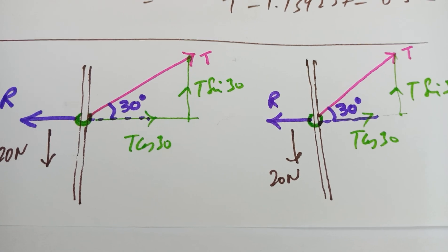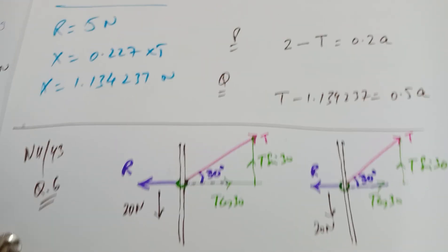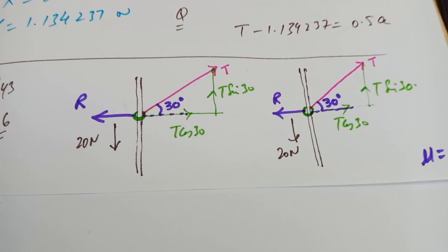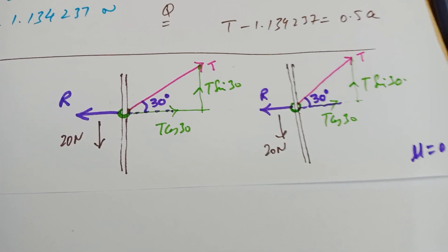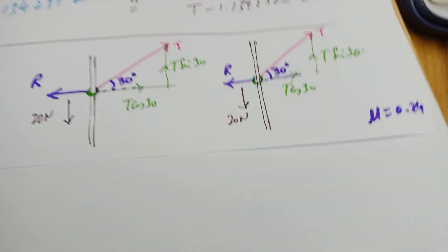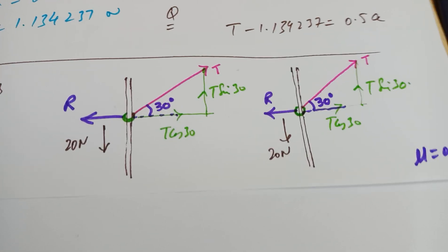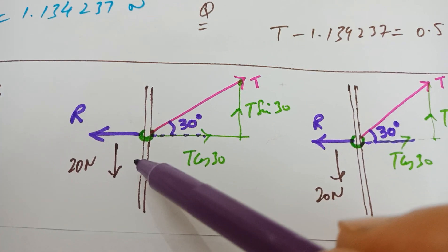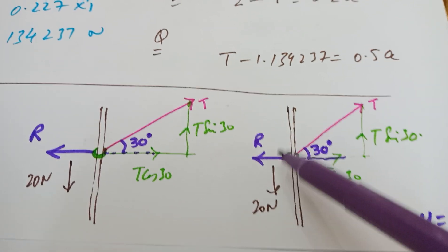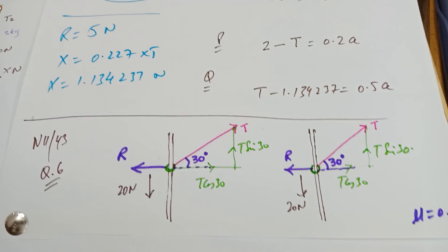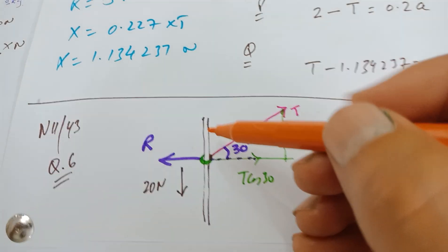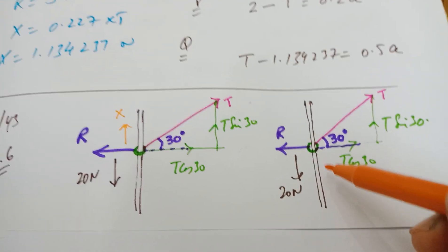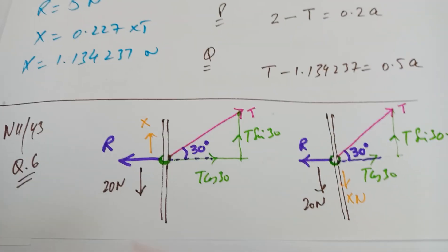The coefficient of friction between the ring and the rod is 0.24, so μ = 0.24. The question says find two values of T for which the ring is in limiting equilibrium — that is why I have two diagrams. We consider two cases: one when the ring is about to slip downwards, and one when it is about to slip upwards. When slipping downwards, friction acts upwards.